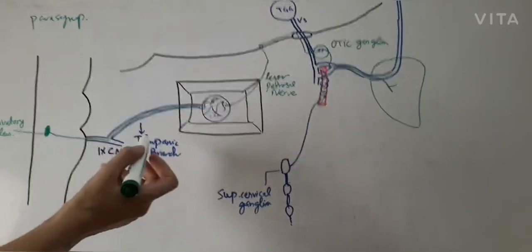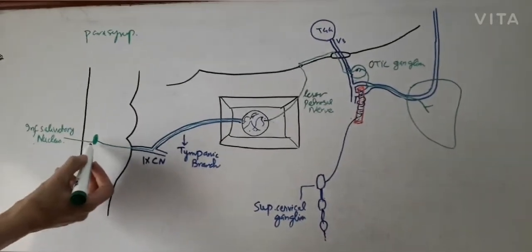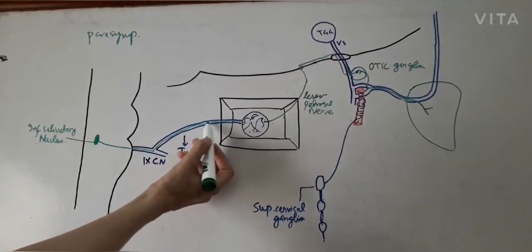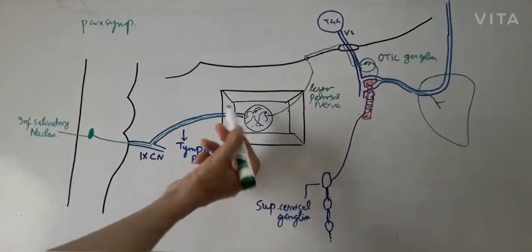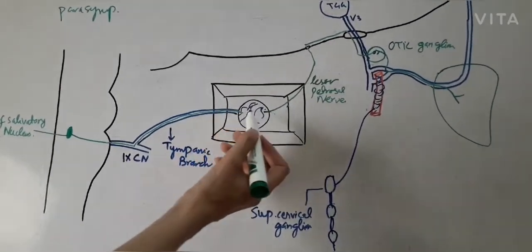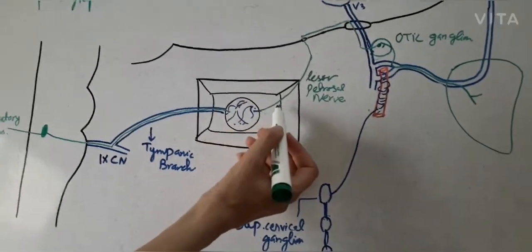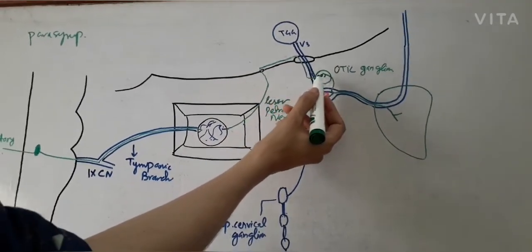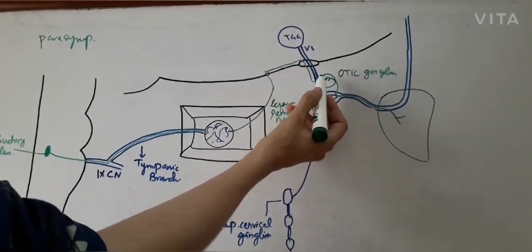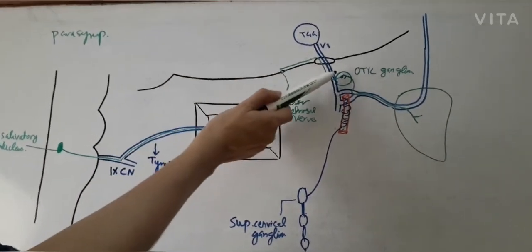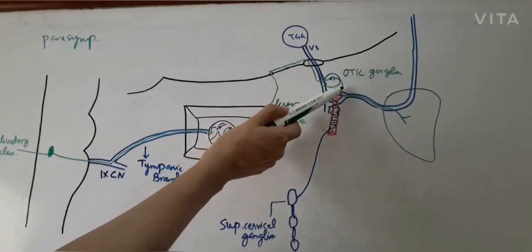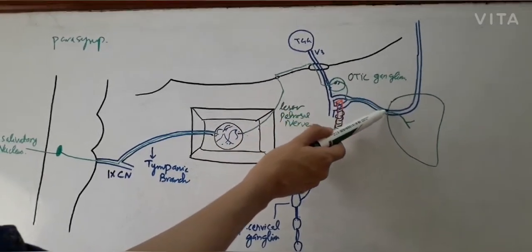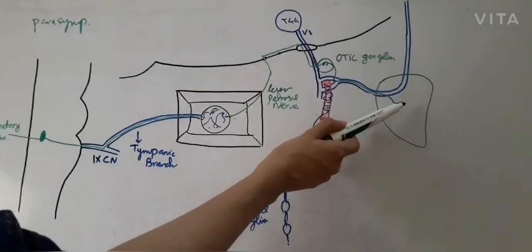To summarize the parasympathetic pathway: inferior salivatory nucleus → glossopharyngeal nerve → tympanic branch → tympanic cavity → tympanic plexus → lesser petrosal nerve → leaves through foramen ovale → reaches otic ganglion → fibres synapse → postganglionic fibres join the auriculotemporal nerve through a communicating branch → pass along it → reach the parotid gland.